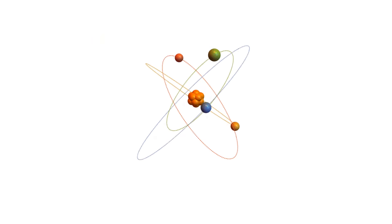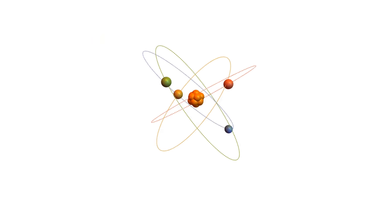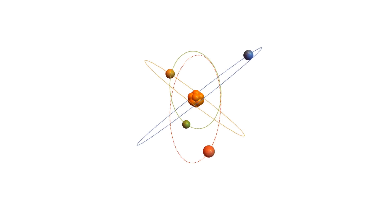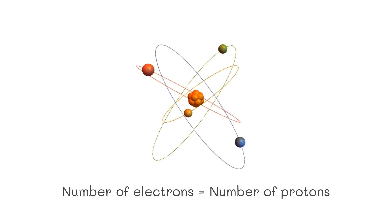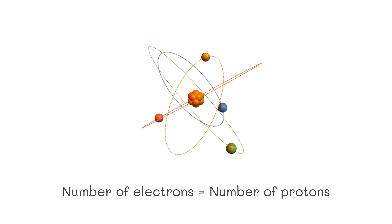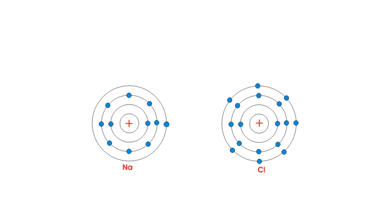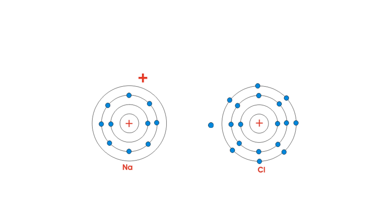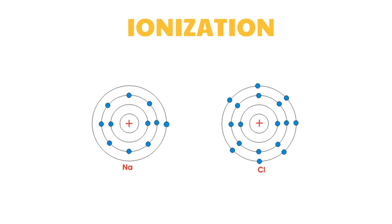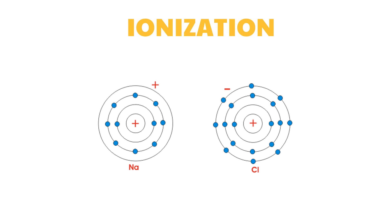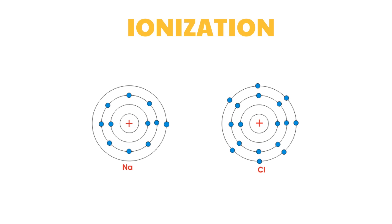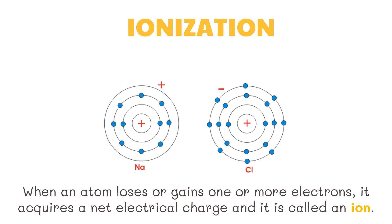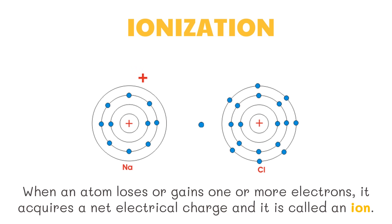An atom is electrically neutral — it has neither a positive nor a negative charge. In order for an atom to be neutral, the number of electrons must equal the number of protons. However, atoms can sometimes give off or gain electrons. If this happens, the atom becomes electrically charged. The process in which an atom loses or gains electrons is called ionization.